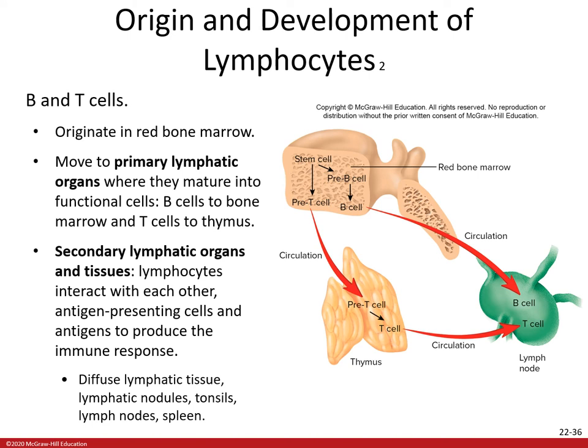B and T cells originate in bone marrow and move to primary lymphatic organs to mature into functional cells. B cells mature in bone marrow and T cells mature in the thymus. The secondary lymphatic organs and tissues include lymphocytes interacting with each other, antigen-presenting cells, and antigens to produce the immune response — found in diffuse lymphatic tissue, lymphatic nodules, tonsils, lymph nodes, and the spleen.